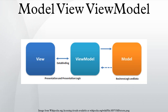The view model is a model of the view, meaning it is an abstraction of the view that also serves in mediating between the view and the model, which is the target of the view's data bindings. It could be seen as a specialized aspect of a controller that acts as a converter, changing model information into view information and passing commands from the view into the model. The view model exposes public properties, commands, and abstractions, and has been likened to a conceptual state of the data as opposed to the real state of the data in the model. The role of the controller or presenter of other patterns has been substituted with the framework binder and view model as mediator and converter of the model to the binder.